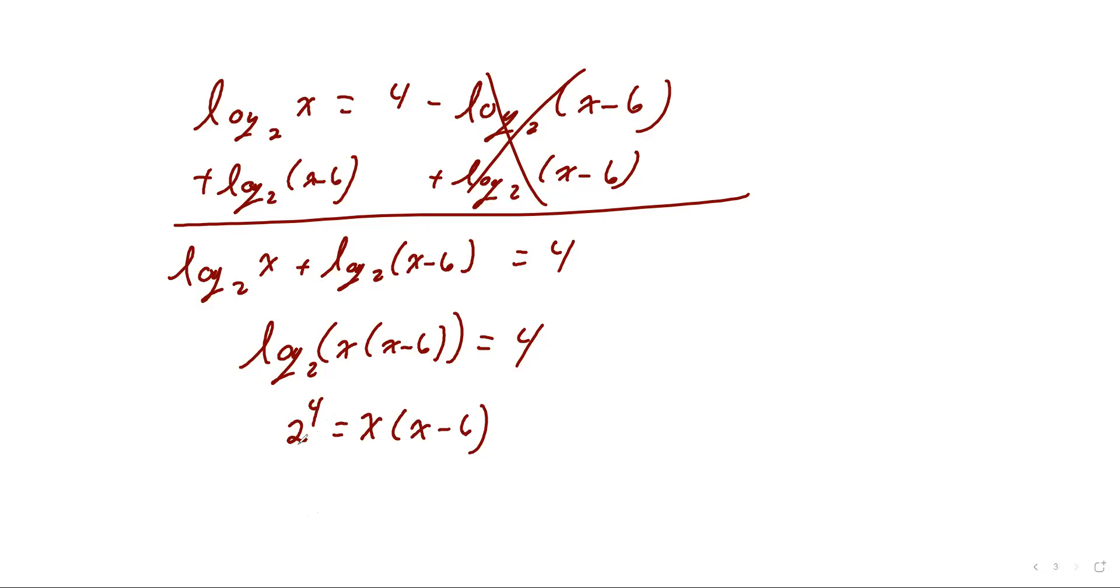And then we just solve it. 2 to the 4th is 16. Distribute this, you get x squared minus 6x. I know this is now quadratic, so I need to set this equal to 0. And then this is where you factor. So a trinomial, we now know, factors into two binomials, where the leading term will be x. The only game to the math we've got to figure out is what two numbers multiply to negative 16, but add up to negative 6. All of you came up with negative 8 and positive 2. That multiplies to negative 16 and adds to negative 6. When we set those equal to each other, I get x equals 8 and x equals negative 2.